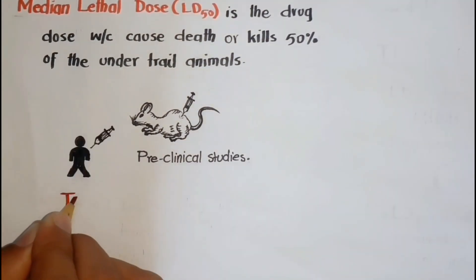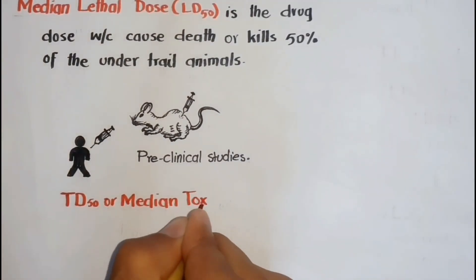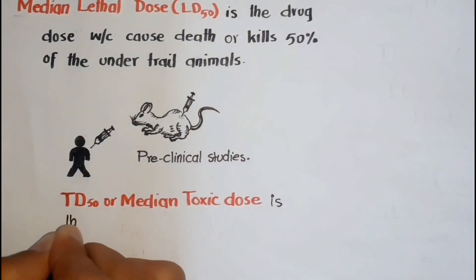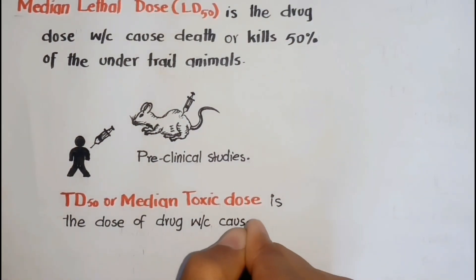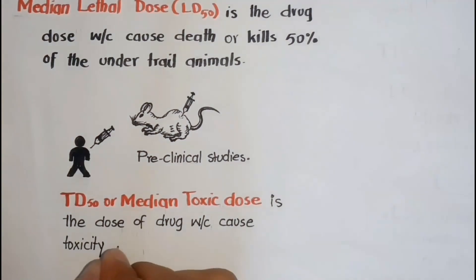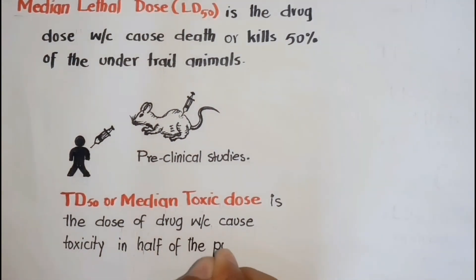In humans, mostly median toxic dose or TD50 is usually evaluated, which is the dose of a drug which causes toxicity in half or 50% of the population.